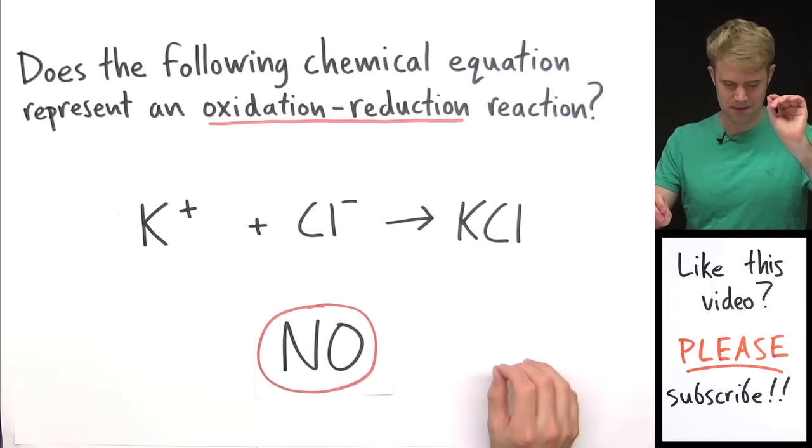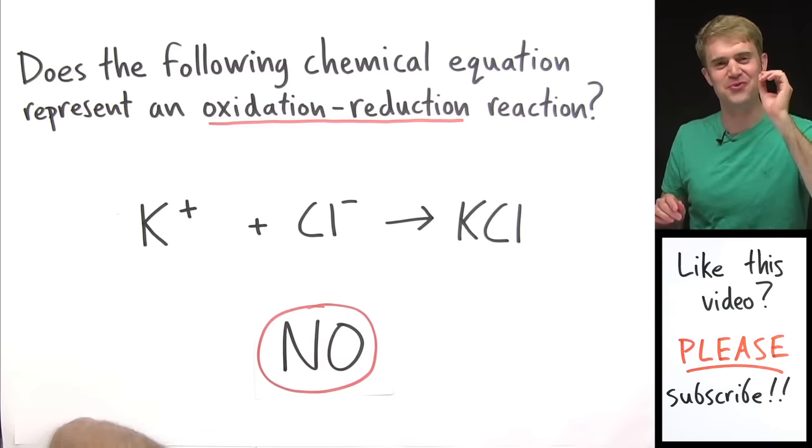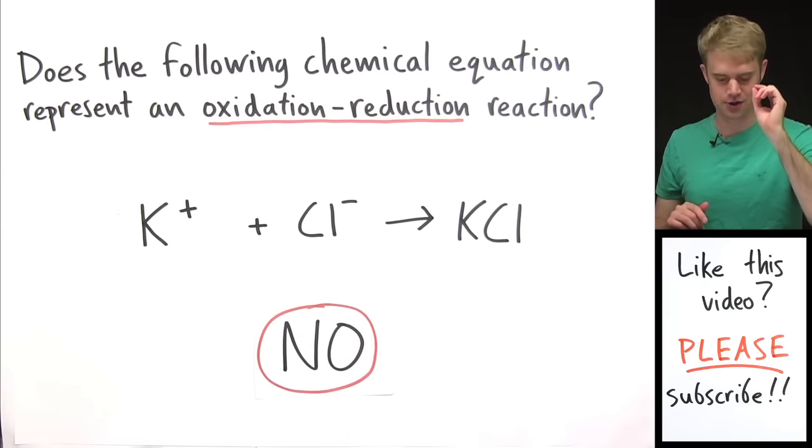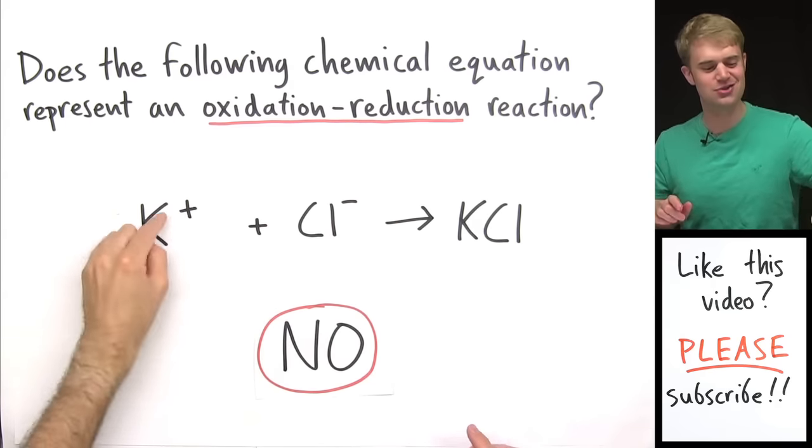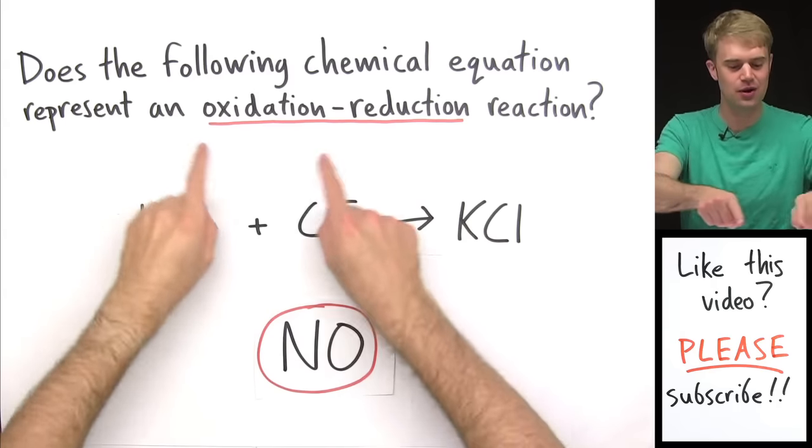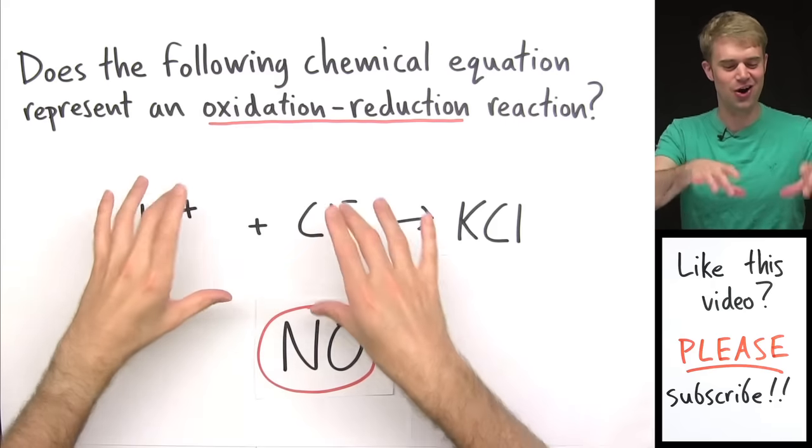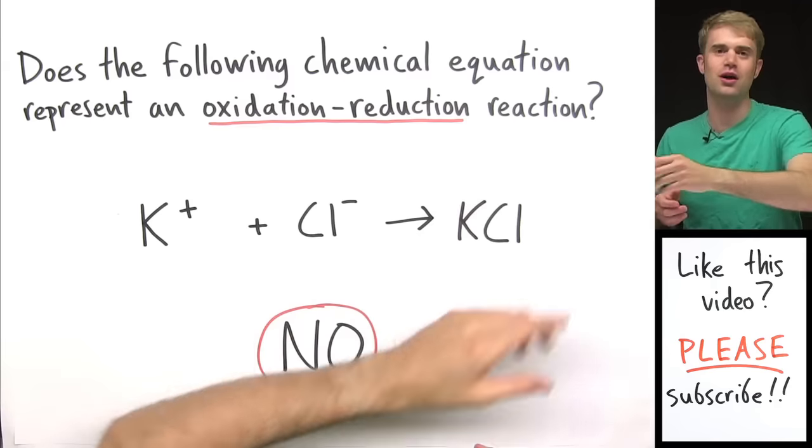So if you got this wrong, I'm not a professional mind reader, but I want to try to read your mind right now and guess why you thought this was a redox reaction. I'm guessing it's because you saw the plus and the minus, you saw these charges here, and you realized we were dealing with ions. And you thought, yeah, pluses, minuses, charges, ions, these are things we see in oxidation-reduction reactions.